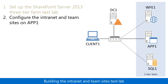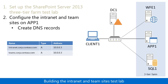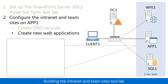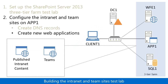In step two, you configure the intranet and team sites on App1, the application server. This consists of the following procedures. First, you add two address records, or A records, to the DNS server service running on DC1. The addresses are for App1, and the names correspond to the new intranet and team sites that you will later create. Next, you create two new web applications named Published Intranet Content and Teams.